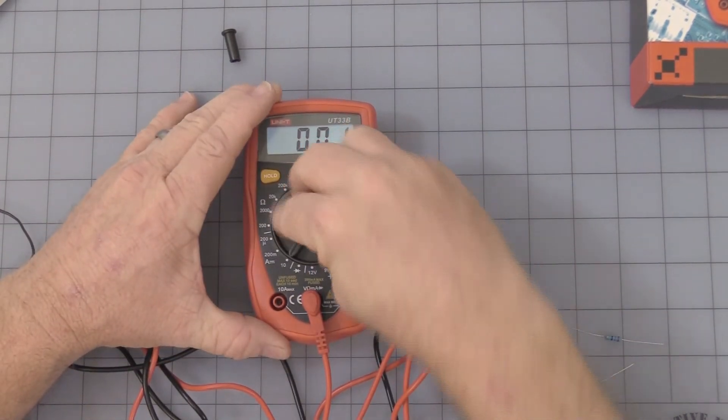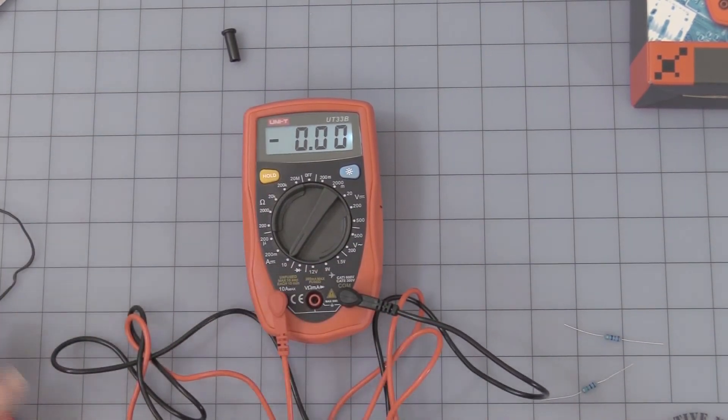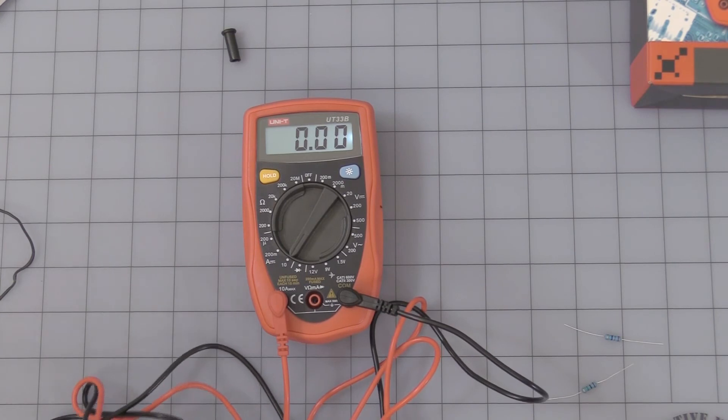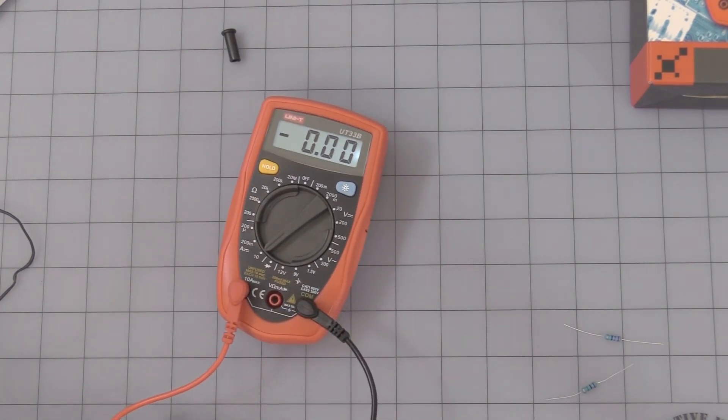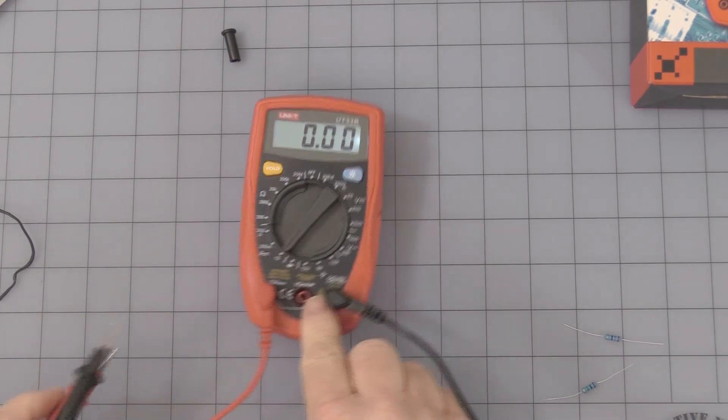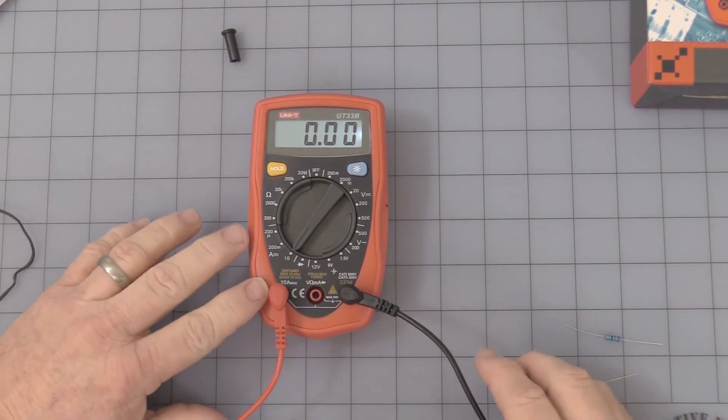But you switch this over to the 10 amp range. Switch your red lead over to the 10 amp area. I'm just going to happen to short out my little benchtop power supply so we can see, yeah, 3.2 amp load. Like I said, keep in mind not to run it for more than 10 seconds.